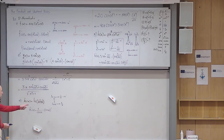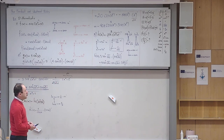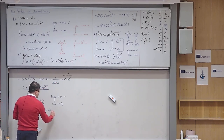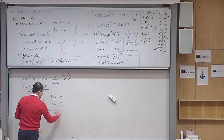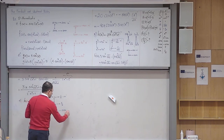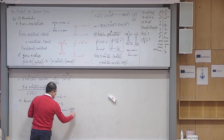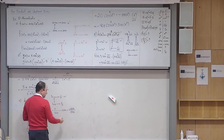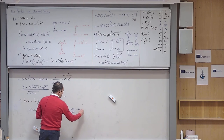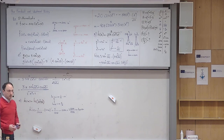So k'(x) = 1/cos(x) · (cos x)' = 1/cos(x) · (−sin x). You can stop there, but I prefer to simplify: (−sin x)/cos(x) = −tan(x). So the derivative of ln(cos x) is −tan(x).